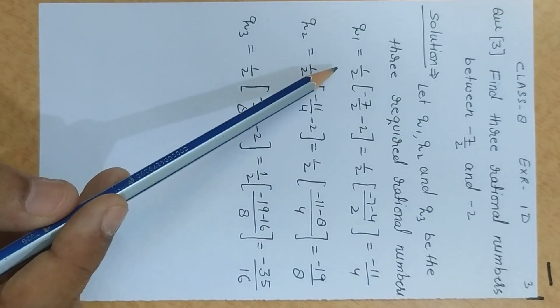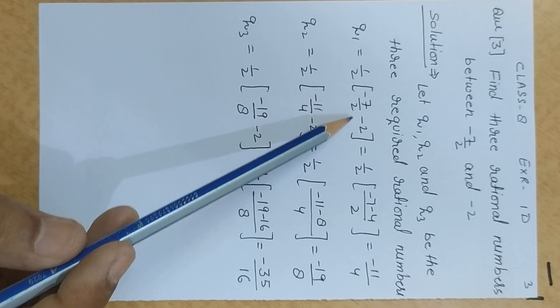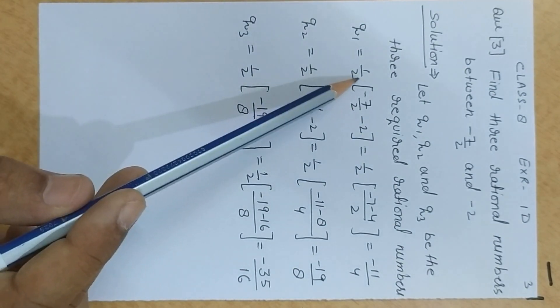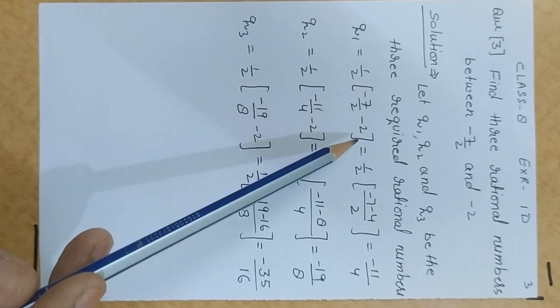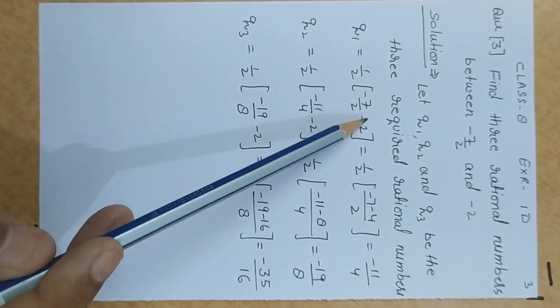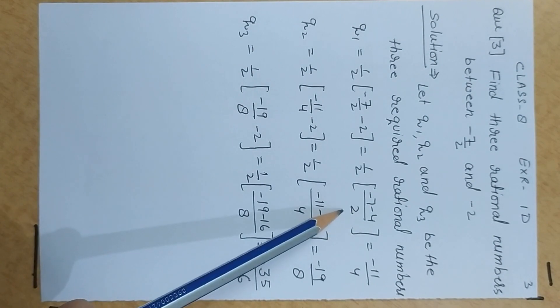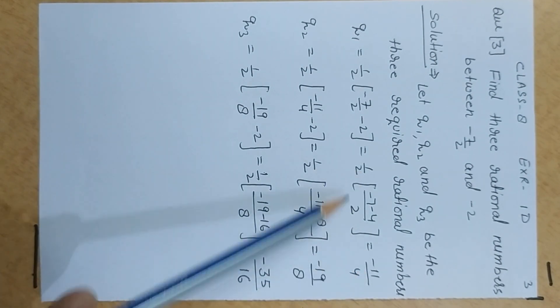1 upon 2 times minus 7 upon 2 plus minus 2. Now, here both numbers are negative. So, minus 7 by 2 minus 2. Simplify the bracket term. Taking LCM as 2, we get minus 11 by 2.